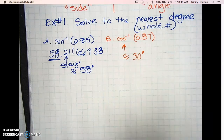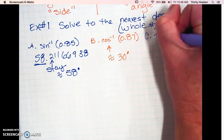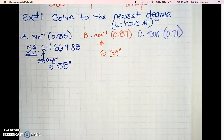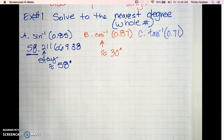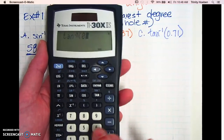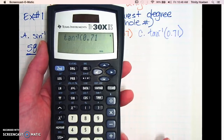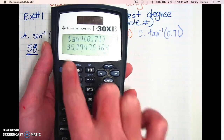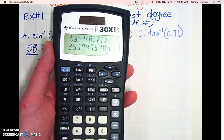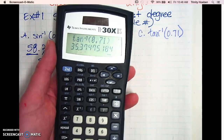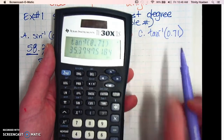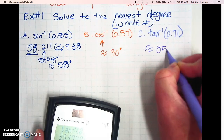Let's try one more for tangent: inverse tan of 0.71. Hit the second button, then the tangent button, type in 0.71, close the parentheses, and hit equals. This time we've got 35.3 and then more numbers. So it's either going to stay 35 or round up to 36. The number after the decimal is a 3, so we stay — this is approximately 35 degrees.